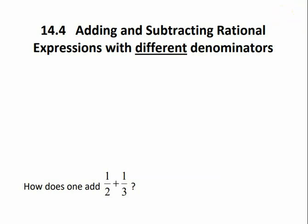Adding and subtracting rational expressions with different denominators. We just talked about adding and subtracting rational expressions with the same denominators. Remember that rational expressions are basically fractions, but they contain polynomials in the numerator and or the denominator. So in order to relate what we're going to do with rational expressions, let's look at two fractions first. If we were going to add these two fractions together, what would be the first thing that we need to do?